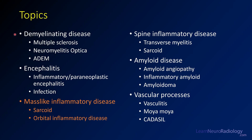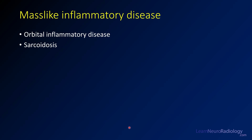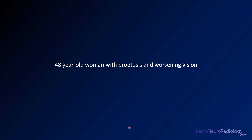In the previous videos, we've talked about demyelinating diseases and encephalitis. Today we'll talk about these mass-like diseases — sarcoidosis and orbital inflammatory disease — which can have masses, look like tumors, and appear either in the CNS or in the orbits.